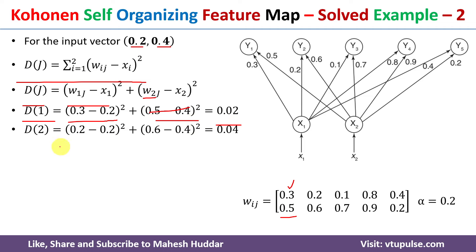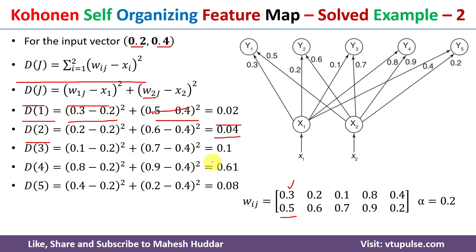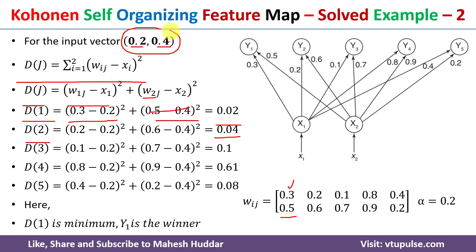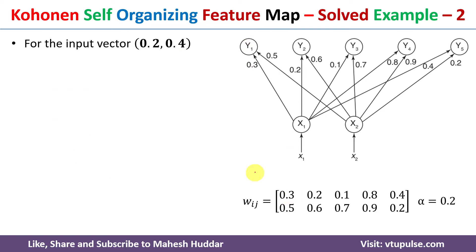This gives d1 = 0.02. Similarly, d2 = 0.04, and we calculate d3, d4, and d5. Once all distances are computed, we check which has the minimum value. In this case d1 is minimum, meaning the input vector is assigned to the first cluster. Now we need to update the weights associated with that cluster; the weights with respect to y1 are 0.3 and 0.5.